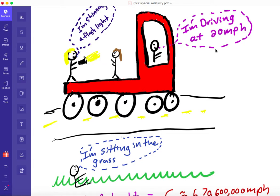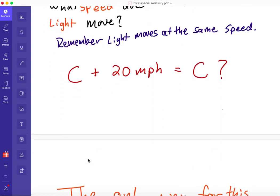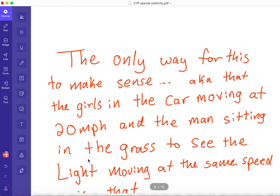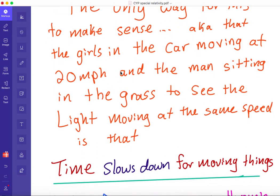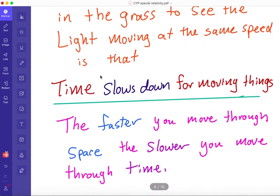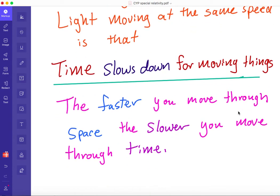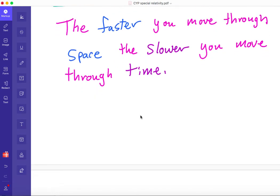Well, the only way to make sense of this is that time is moving slower for the girls in the car. So they see the light moving at the speed of C, and the man also sees the light moving at the speed of light. So this is where this fourth dimension comes in. Someone moving, time slows down in order for them to see the light moving at the same speed. And we've reached a conclusion that time slows down for moving things. The faster you move through space, the slower you move through time. And that's how we get the fact that the universe is four-dimensional.